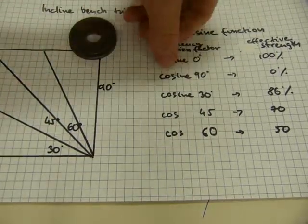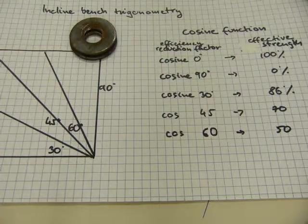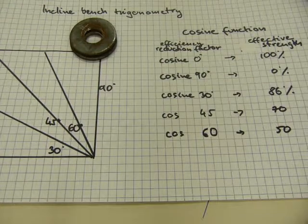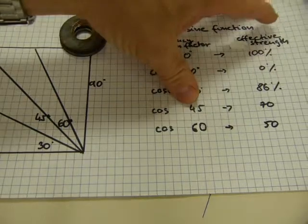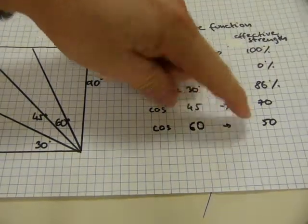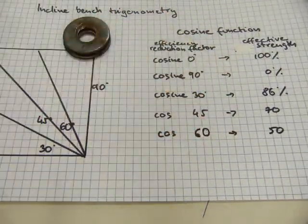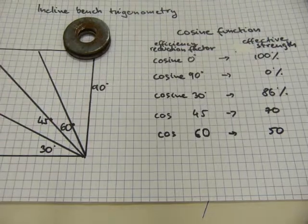At zero degrees horizontal, you had one hundred percent of your effective strength available to you. At forty-five degrees it's only seventy percent, and at sixty degree bench work it's only fifty percent. You're half as strong on a sixty degree bench basically than on a zero degree bench.